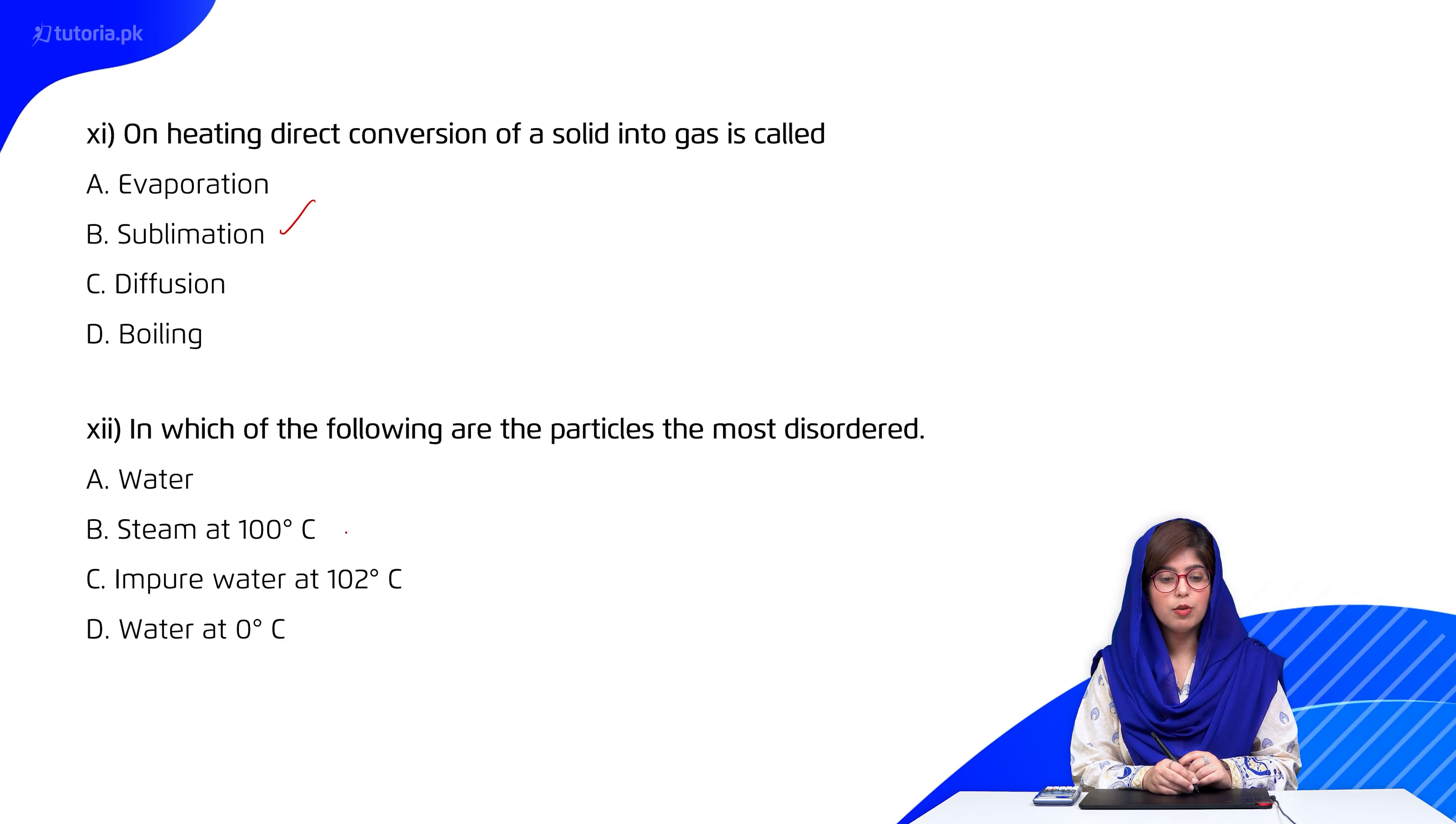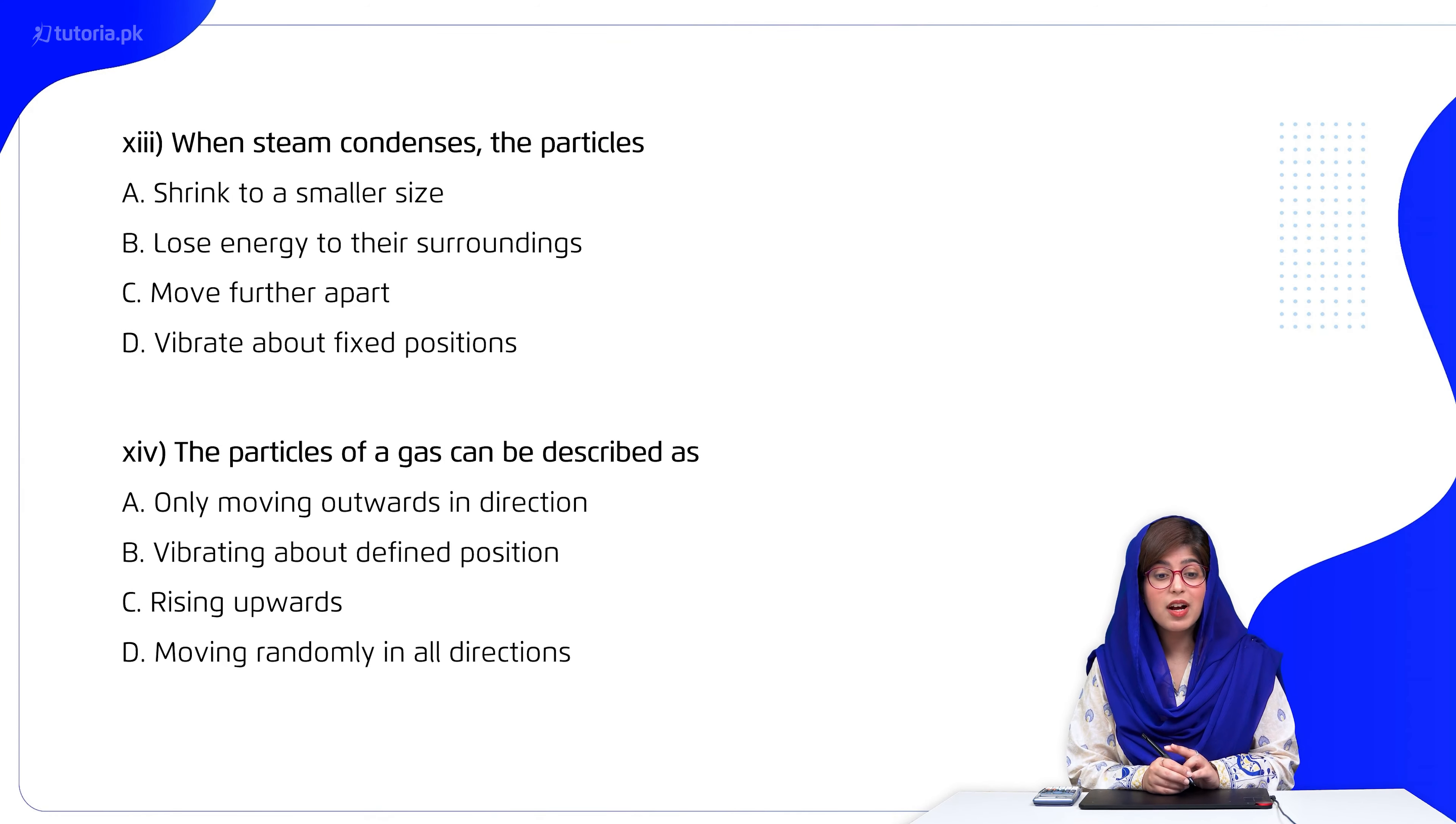So students, when steam condenses, the particles: A shrink to smaller size, B lose energy to their surroundings, C move further apart, D vibrate about fixed position. So students, remember that when steam condenses, when vapors condense, water vapors especially, then the energy to surroundings which they gain from the liquid form to the vapor form, when they lose that energy, they convert to their liquid state. So we can say that they lose their energy to the surroundings.